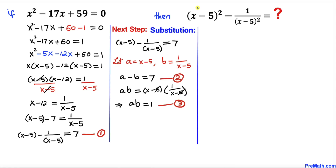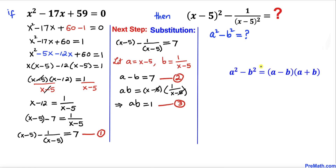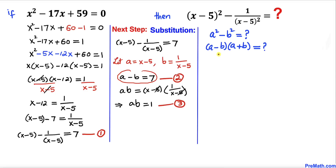Now let's focus on the expression (x minus 5) squared minus 1 over (x minus 5) squared. Since a equals (x minus 5) and b equals 1 over (x minus 5), this expression becomes a squared minus b squared. Recalling the famous identity, a squared minus b squared equals (a minus b) times (a plus b). We know a minus b equals 7, so we replace that by 7. Now our job is to find the value of a plus b.